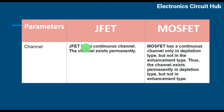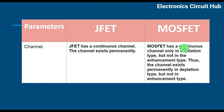Channel: JFET has a continuous channel — the channel exists permanently. MOSFET has a continuous channel only in the Depletion Type, but not in the Enhancement Type.